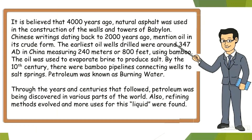It is believed that 4,000 years ago natural asphalt was used in the construction of the walls and towers of Babylon. Chinese writings dating back to 2,000 years ago mention oil in its crude form. The earliest oil wells drilled were around 347 AD in China using bamboo, measuring 240 meters or 800 feet. The oil was used to evaporate brine to produce salt.